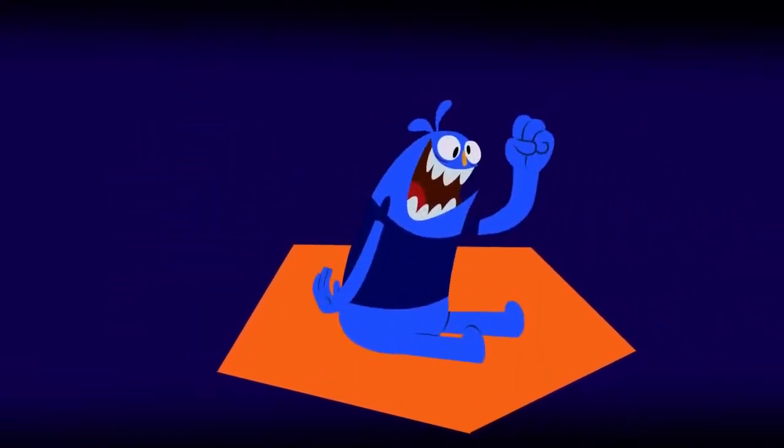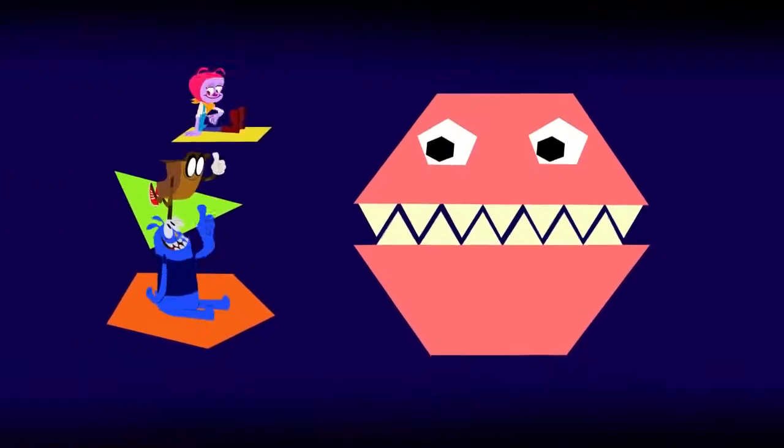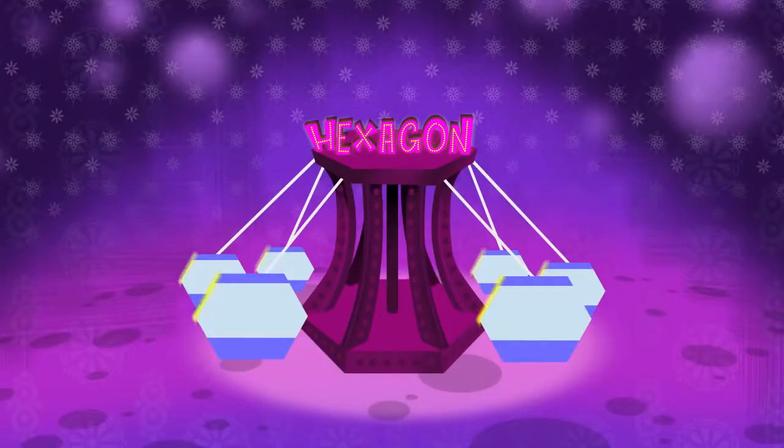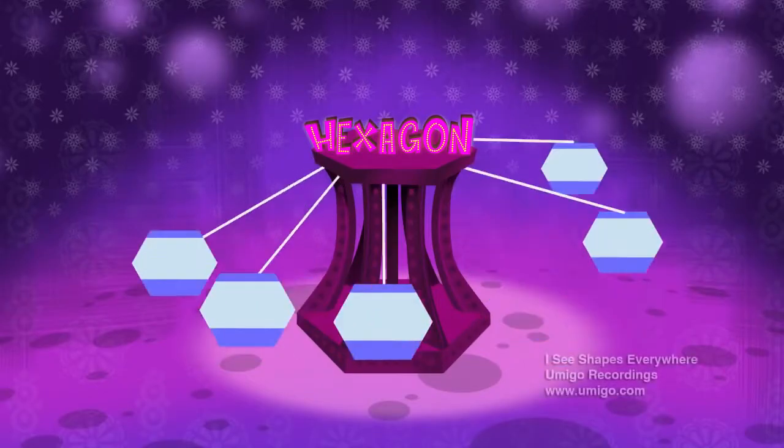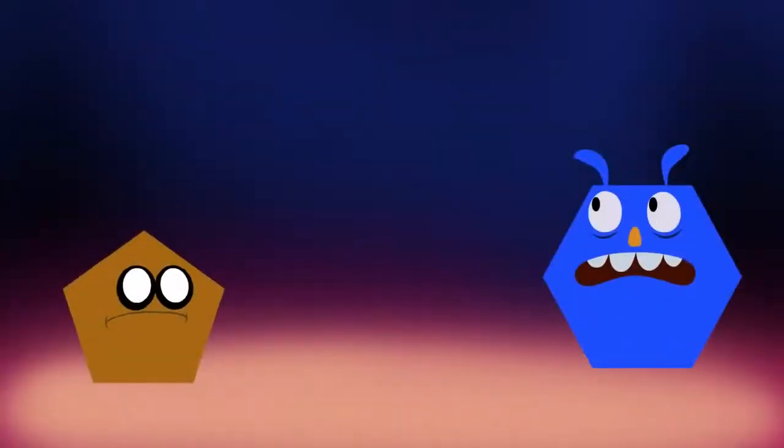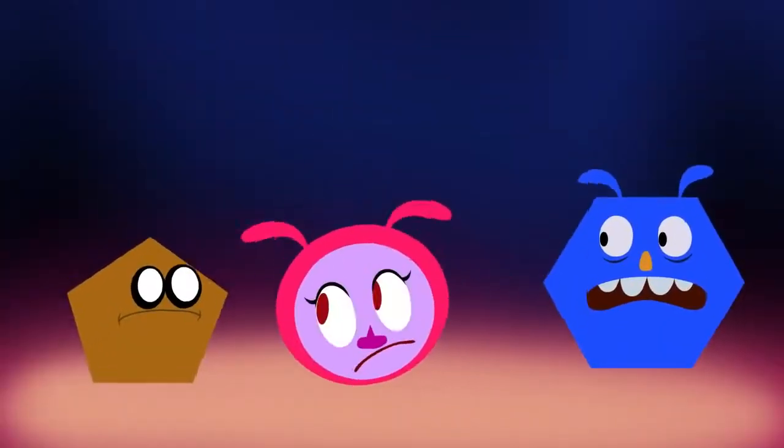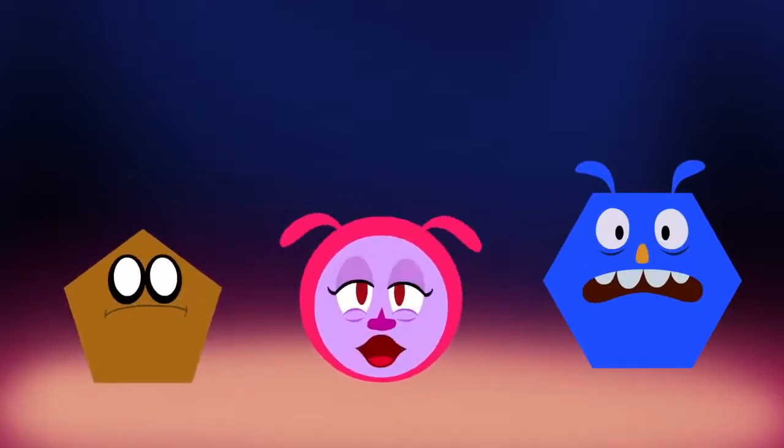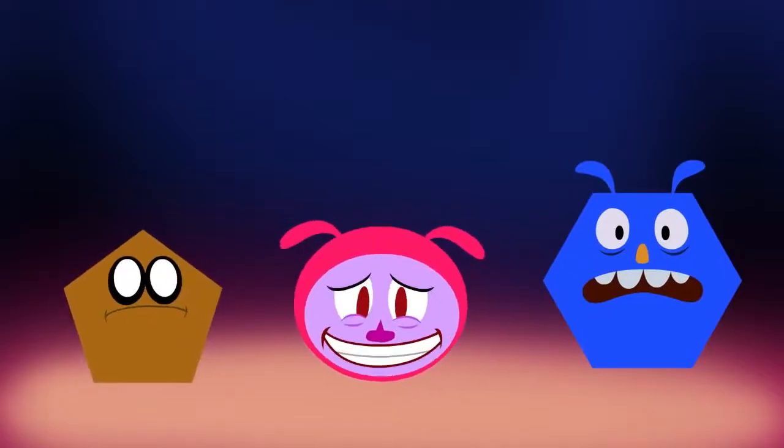I see shapes. I see shapes everywhere. Six-sided hexagons are there for all to share. Circle. I see shapes everywhere. I just couldn't choose sides.